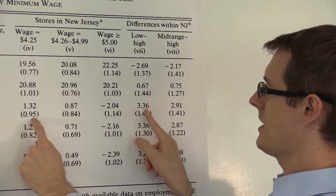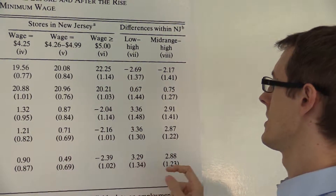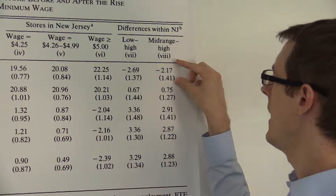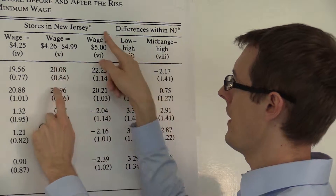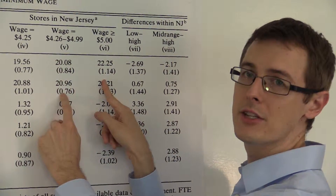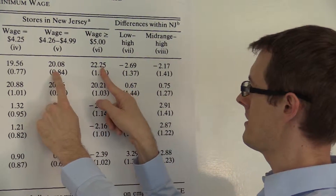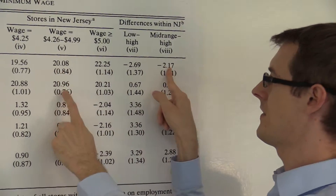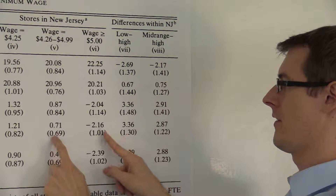Same thing here — you take this difference, you get this, and so on. And then over here, they're comparing the high wage to the mid-range. So you subtract this number from this and you get this, and vice versa for all of these.